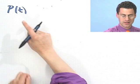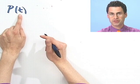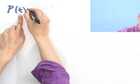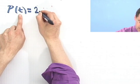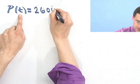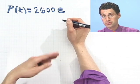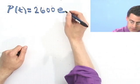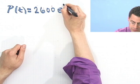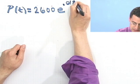So P(t) will be the population t years after 1950. And it turns out that this is, roughly speaking, 2,600 times e, that special number, that's 2.718, raised to the power 0.018 times t.